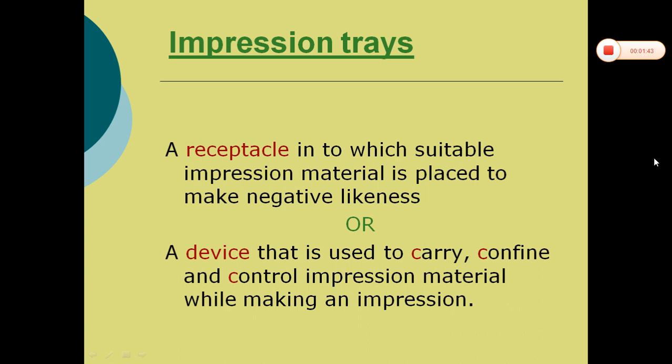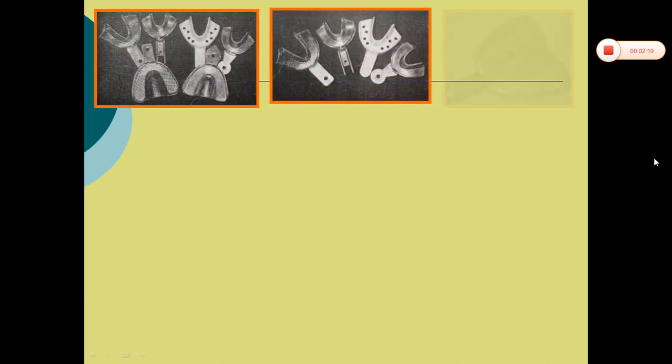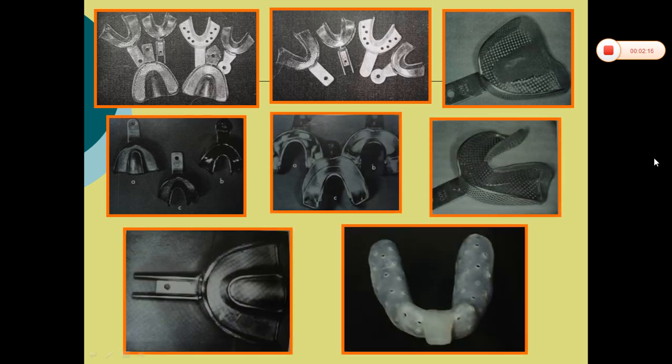In order to make any impression we need impression trays. An impression tray is defined as a receptacle into which suitable impression material is placed to make a negative likeness, or a device that is used to carry, confine, and control impression material while making an impression. There are various kinds of trays that can be used for impression making such as stock trays, rimlock trays, perforated, non-perforated, water-cool trays, or custom trays.